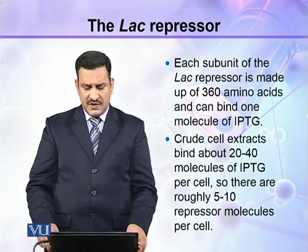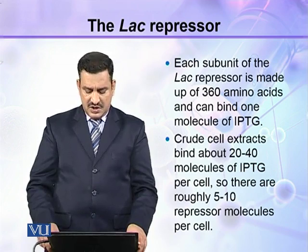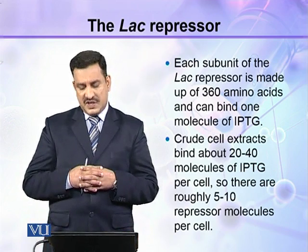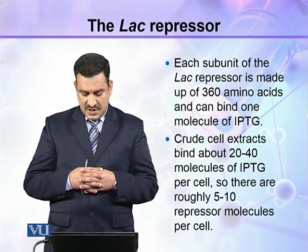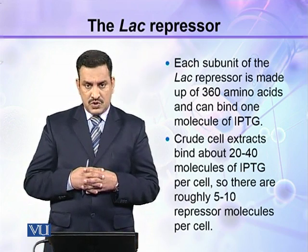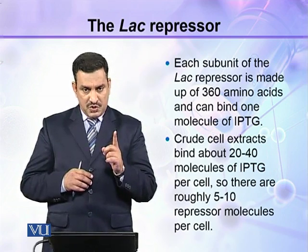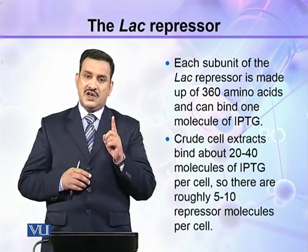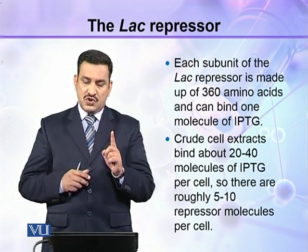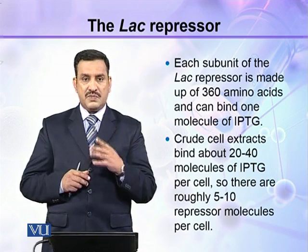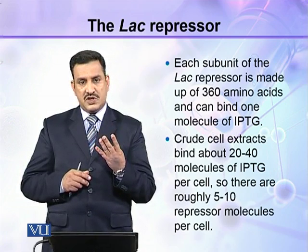There are roughly 5 to 10 Lac Repressor molecules per cell, because each repressor is a tetramer of 4 subunits, and each subunit binds one IPTG molecule.